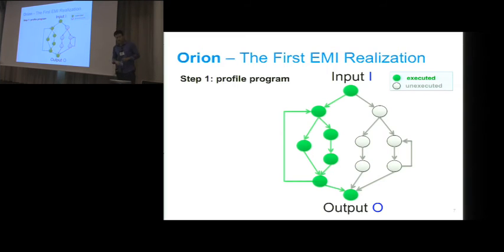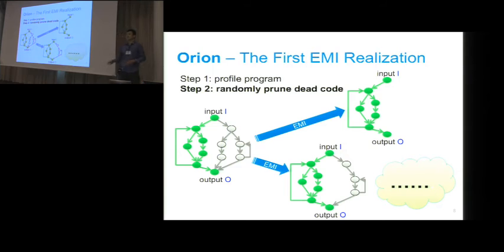The relaxation of the equivalence makes it very easy to derive EMI variants. The first EMI realization is called Orion. It takes two steps to derive an EMI variant. The graph denotes the control flow graph of the seed program. We run this program with the input I and profile the coverage of the statements. The green parts of the graph denote the executed path, and the gray parts denote the unexecuted path, also called as dead code regions. Then Orion can randomly prune statements from the dead code regions. We can delete the entire dead code regions or delete some branches.